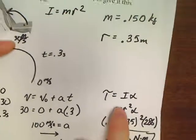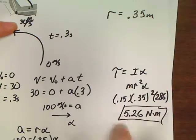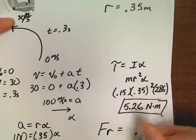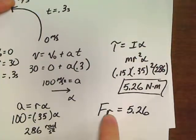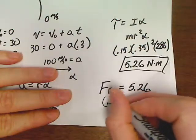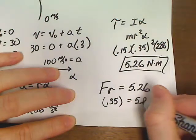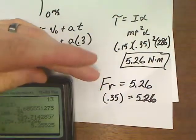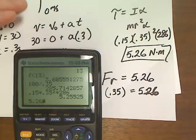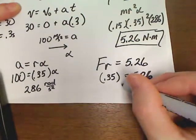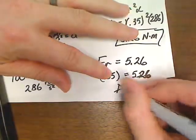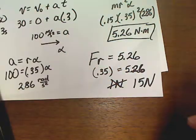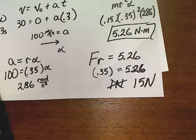If the problem also asks for force, you already have torque. Just use FR = 5.26 with r = 0.35: F = 5.26 ÷ 0.35 ≈ 15 N. I didn't ask for it, but once you have torque you can always recover force using FR.